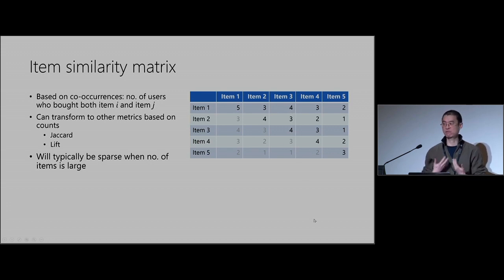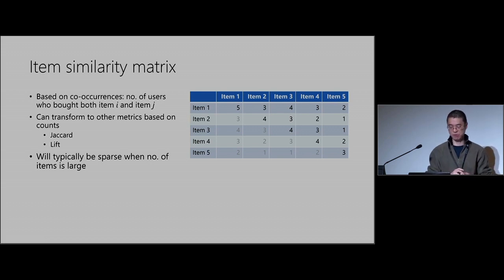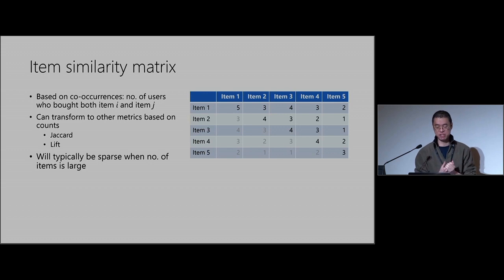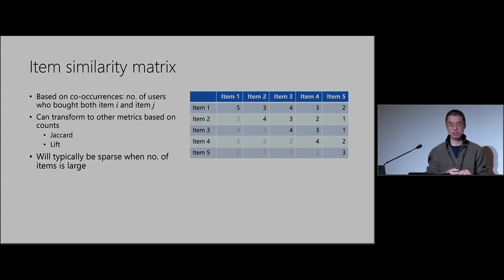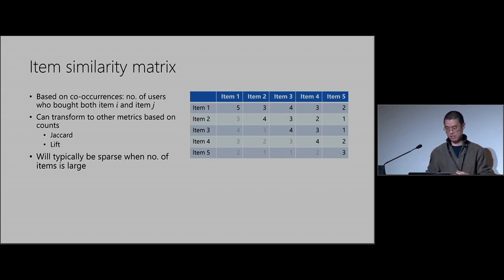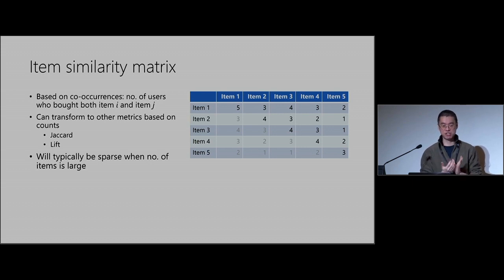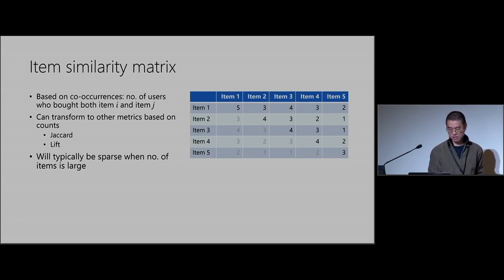You can transform this into other metrics based on counts — things like a Jaccard similarity metric, or lift, and so on. One feature is that this matrix will typically be sparse when the number of items is large — I'll touch on that later.